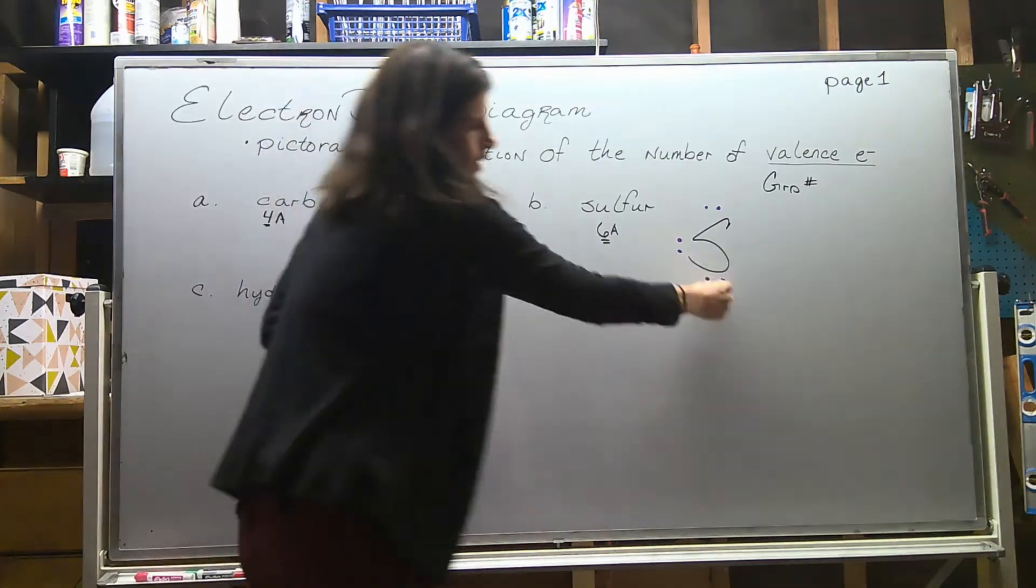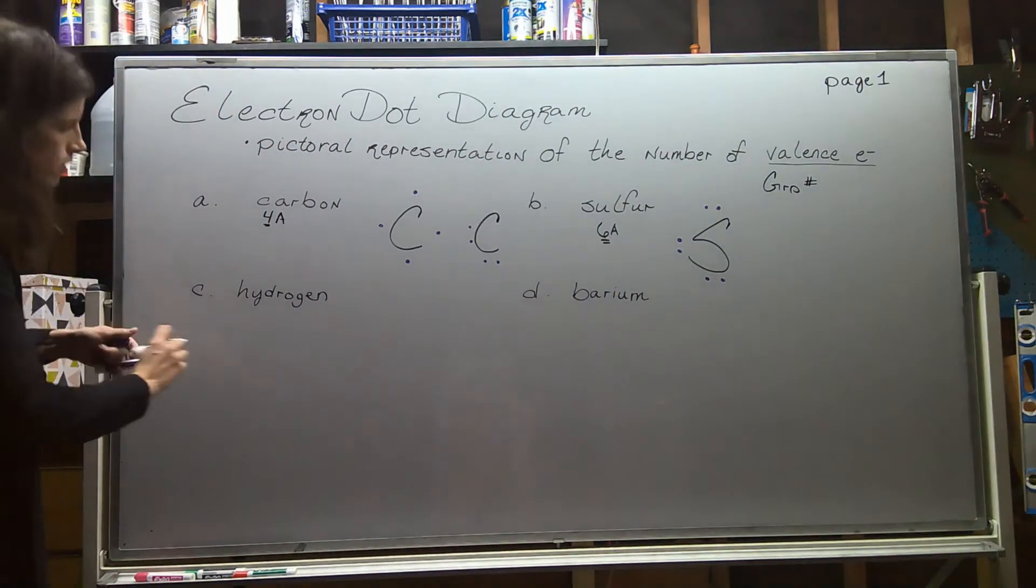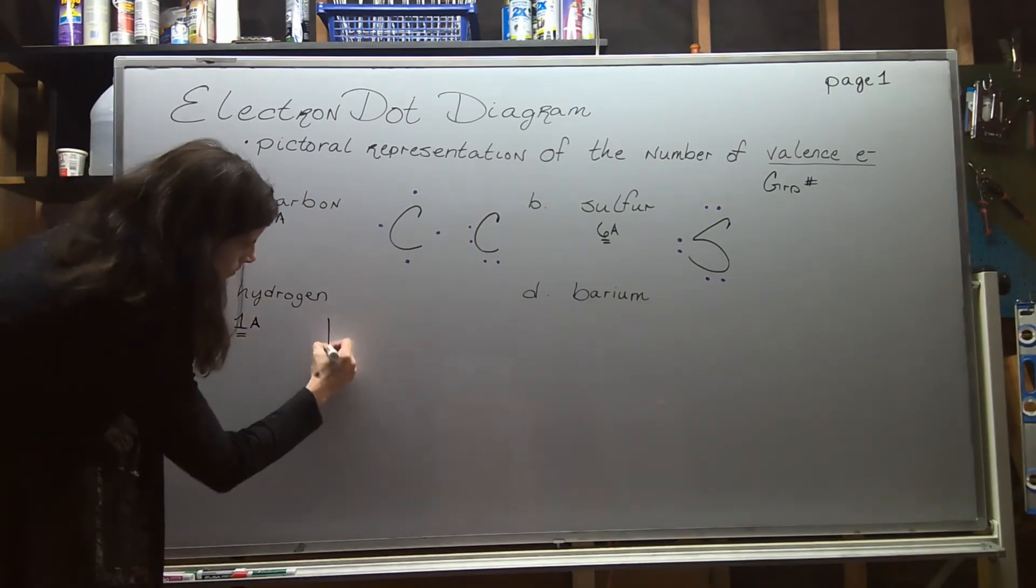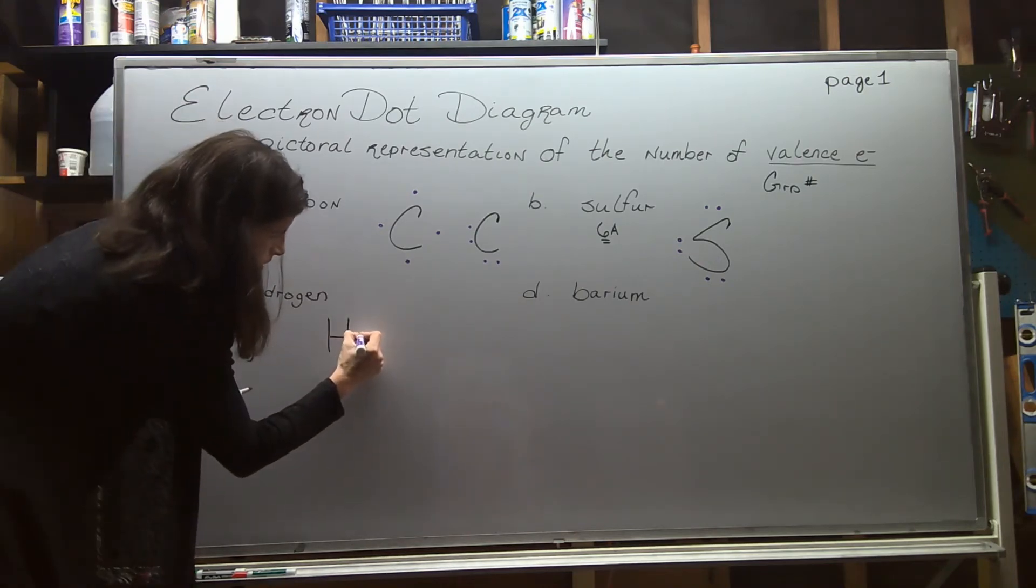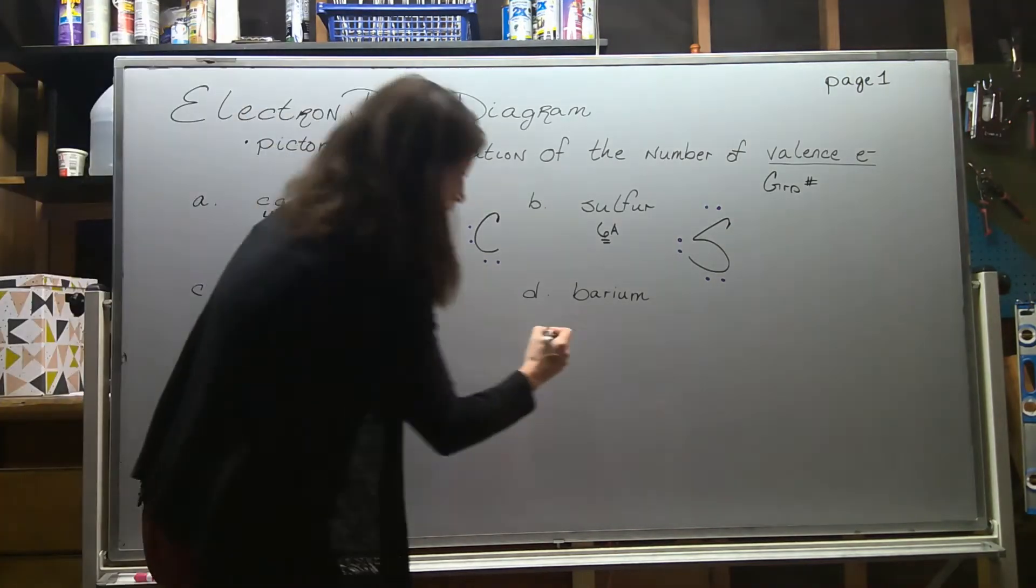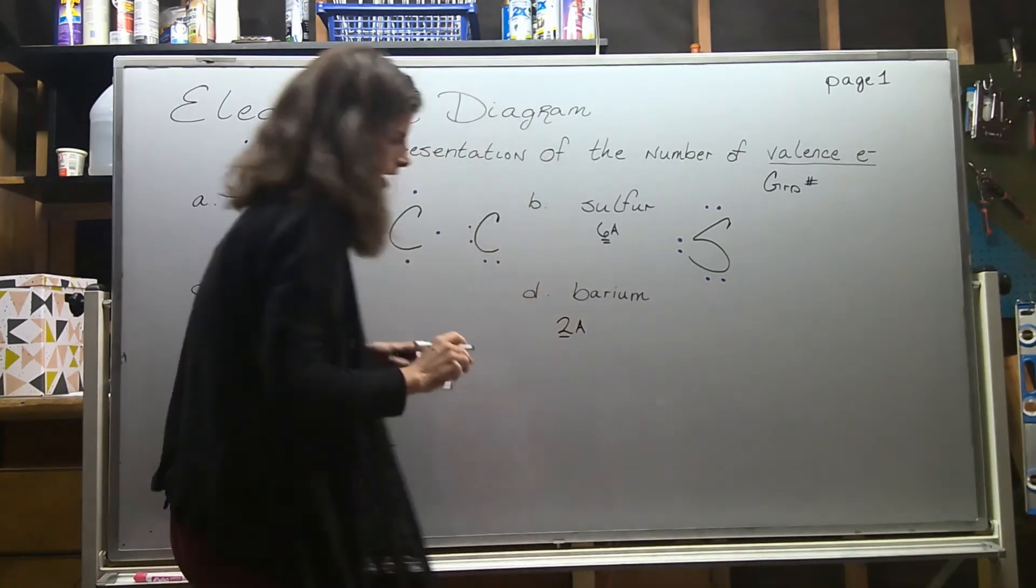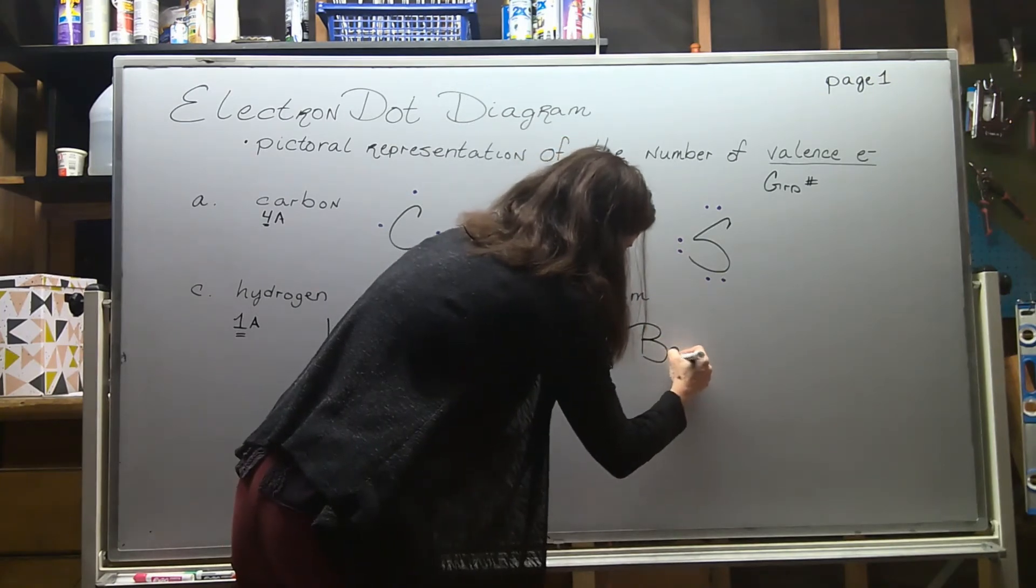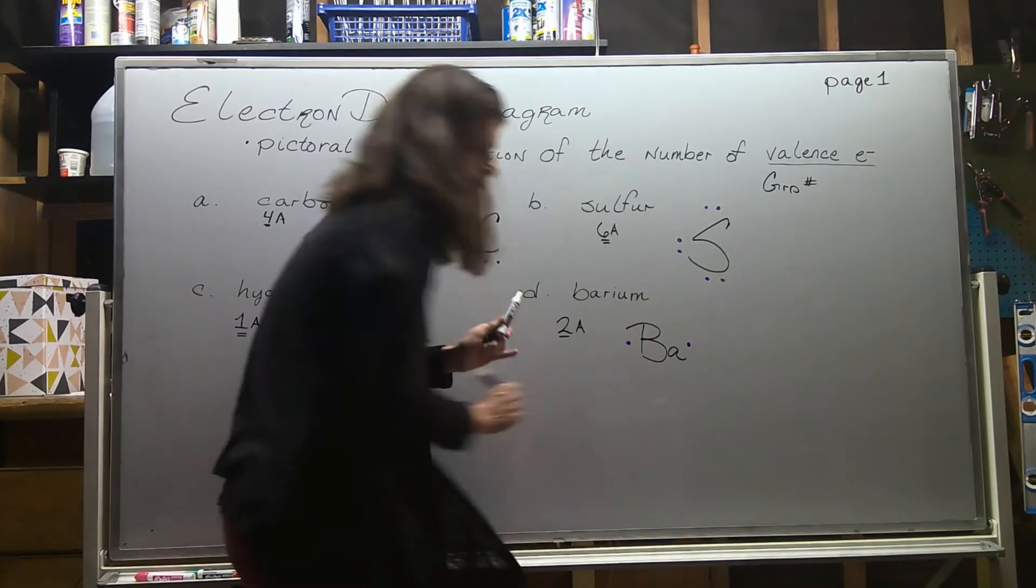Hydrogen is in group 1A, so we have one valence electron, and you can put that one dot, that one electron, anywhere you want. Barium is in group 2A, so we're looking at two valence electrons, and again distribute them however you want.